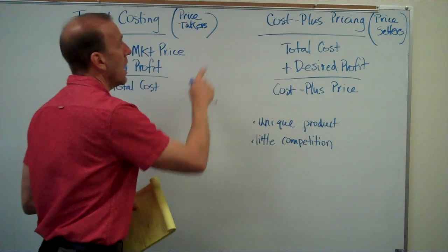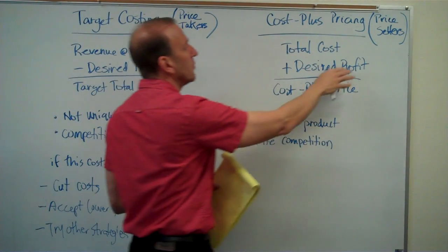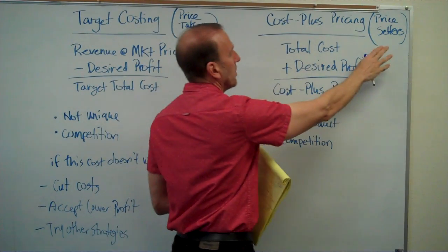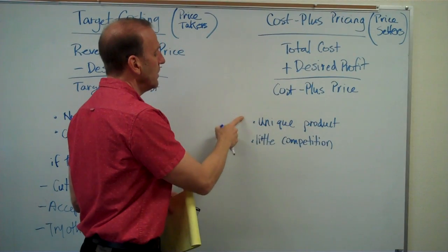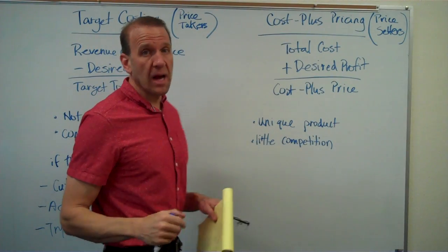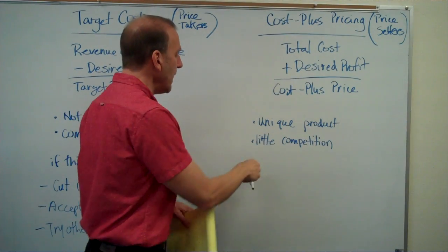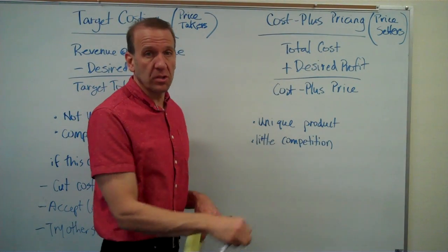Now when we're looking at cost plus pricing, this is for price setters. Over here is price takers; this is the price setting scenario. Because in this scenario, we have a unique product. Our product is different. We can differentiate it from others, and there's little or no competition.